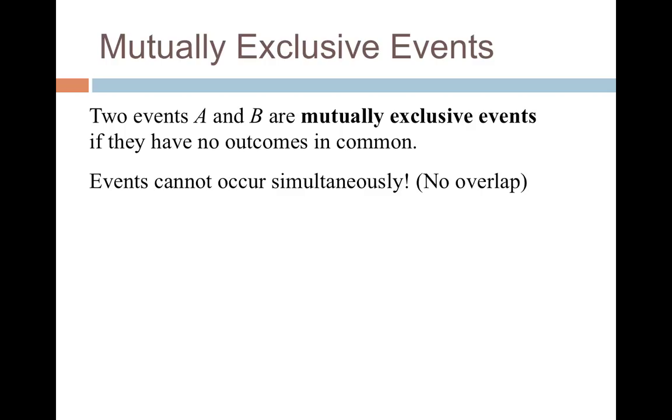We do have to worry about something called mutually exclusive, though. Two events we consider mutually exclusive if they have no outcomes in common, which basically means they can't occur at the same time. Some things are going to be mutually exclusive, and some things are not going to be mutually exclusive. We have to work the problems a little bit different.